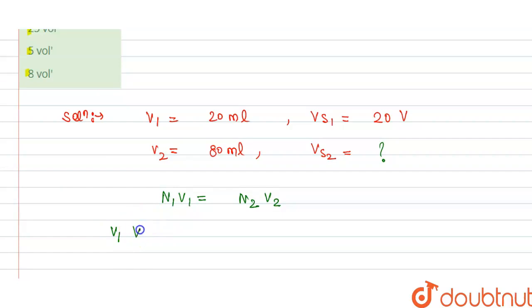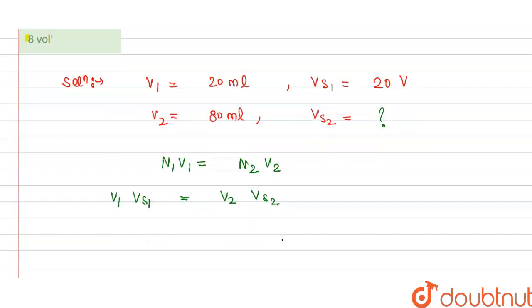V₁ × VS₁ = V₂ × VS₂. So we have volume 1 is 20 ml multiplied by 20 V, and this equals 80